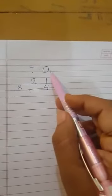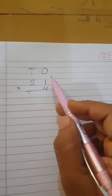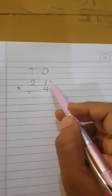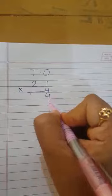First multiply 1s column. Multiply the digit in 1s place with the multiplier 4. That is 1 into 4. 1 4s are 4.